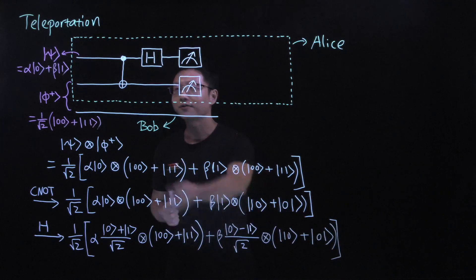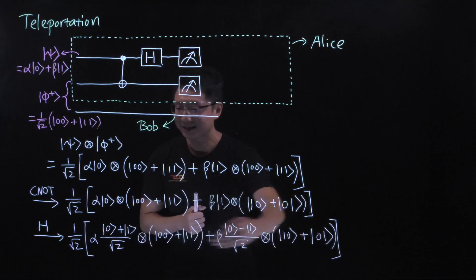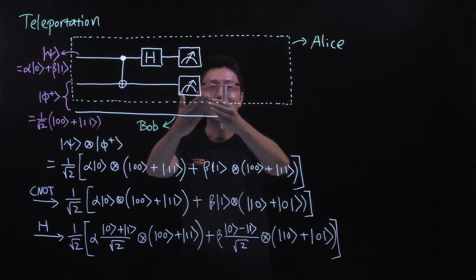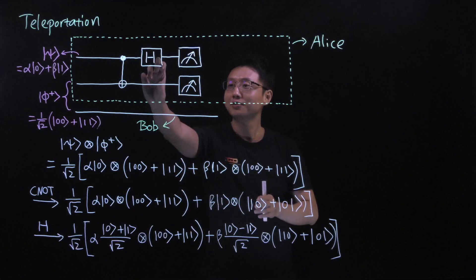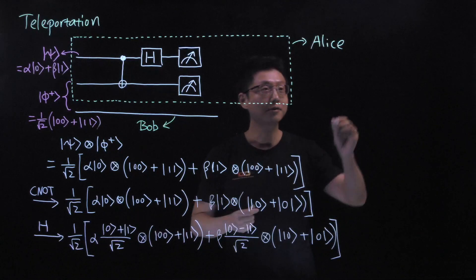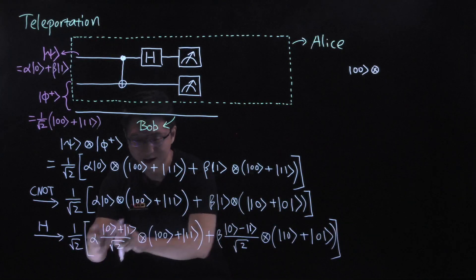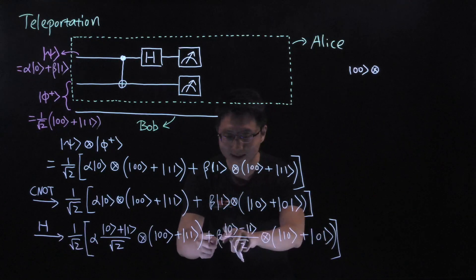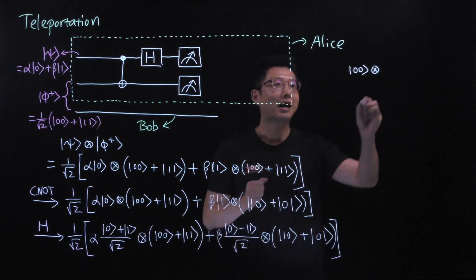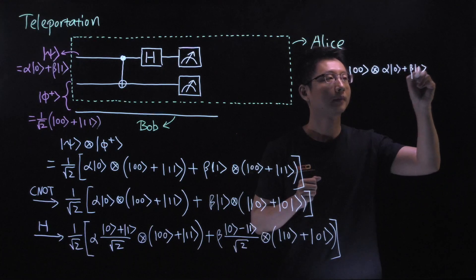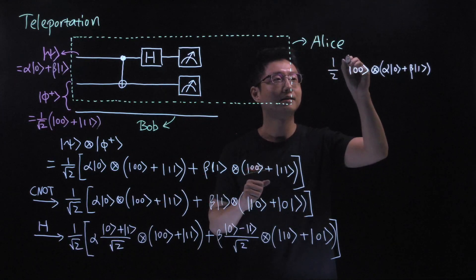This is the state of the three qubits. Before Alice does two projective measurements in the computational basis for her first and second qubit, let's sort out this expression. Since Alice is measuring her two qubits, we group the state by the first two qubits and the last one. The term that goes with |00⟩ for Alice's qubits carries alpha |0⟩ plus beta |1⟩ for Bob's qubit, with an overall factor of one-half.